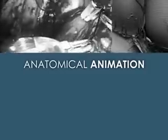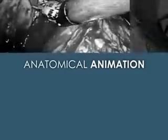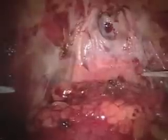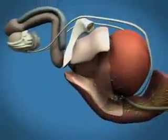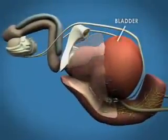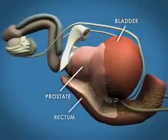This animation will highlight select aspects of robotic radical prostatectomy and presents a simplified view of the anatomy of this area of the body. We begin with a view of the endopelvic fascia. Beneath the endopelvic fascia, we see the bladder and prostate, along with other structural elements.